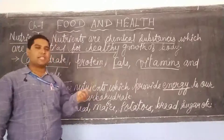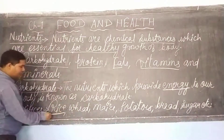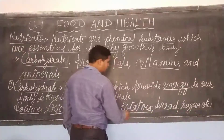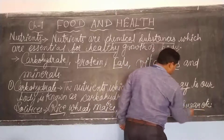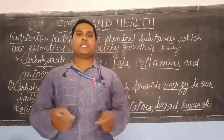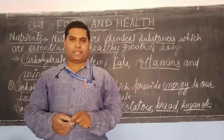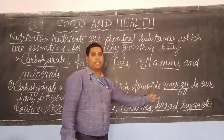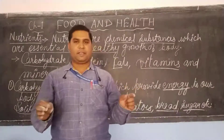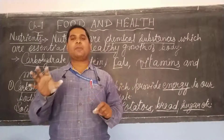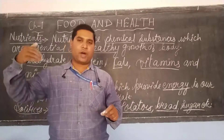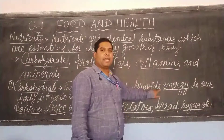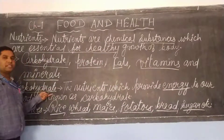The sources by which we get carbohydrate are rice, wheat, meat, potatoes, bread, sugar, and many more. Carbohydrate is essential to provide energy to our body. Without energy, our body can't perform any type of activities. So for normal functioning and performing activities, energy is essential, and energy is provided by the nutrient known as carbohydrate.